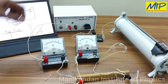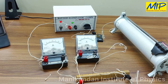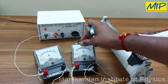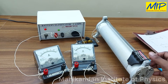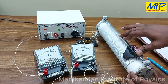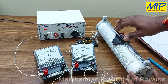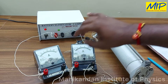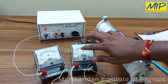Now I'm going to switch on the battery eliminator. The ammeter value is 0.1 ampere and the voltmeter shows the value of 0.3 volt. If I vary the rheostat value, there is an increase in voltage as well as the current. Now my ammeter shows the value of 0.2 ampere and the voltmeter is 0.6 volt.